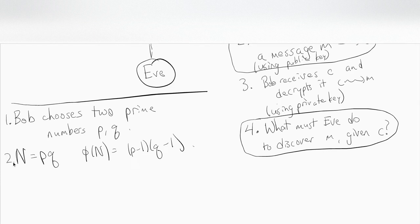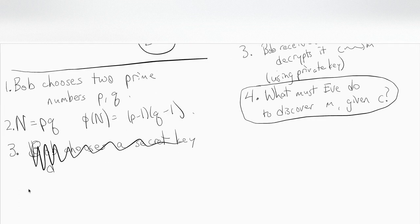Now given that, what does Bob do? Bob chooses—oh wait, no, no, no. First Bob chooses his public—yeah, sorry, I think this makes more sense. Bob chooses e.